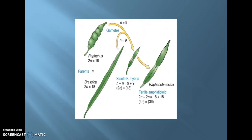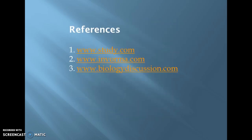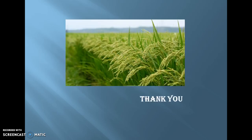Next one is Raphanobrassica. It is the cross between radish and cabbage. However, Raphanobrassica turned out to be an unfruitful one because the desired traits were not obtained as a result of hybridization. Thank you all for your patience.